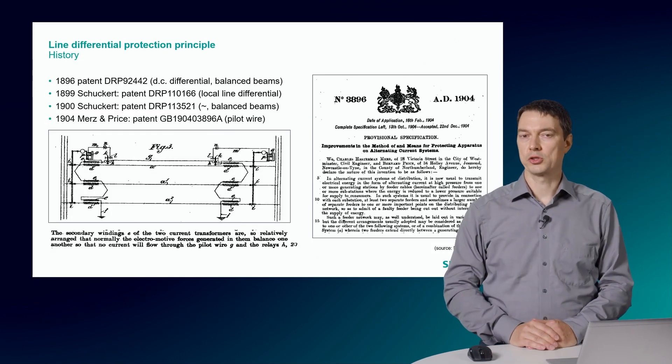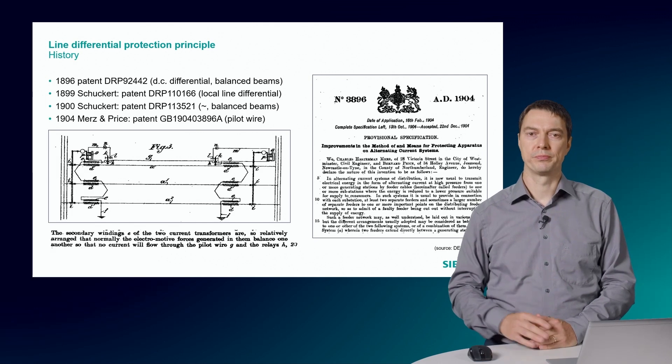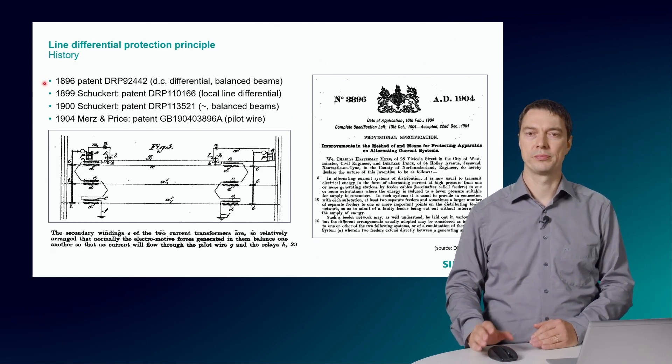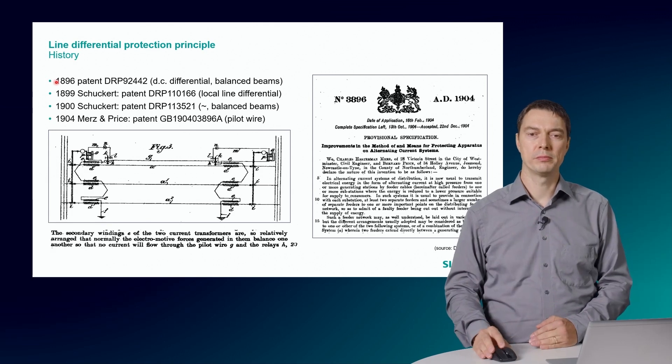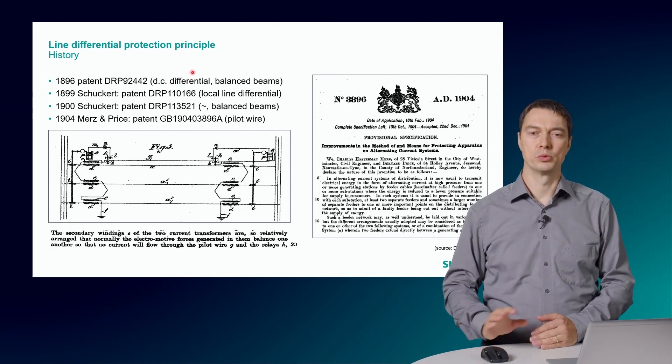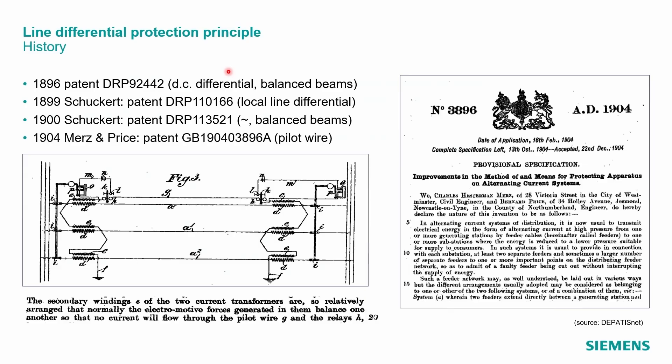The Line Differential Protection Principle is very old. It started around 1900 with patents by Schugert. A balanced beam was used for the DC differential protection. Later, around 1900, Schugert enhanced it further for the AC lines but still used the local measured currents for the differential protection. Merz and Price in 1904 marked with their patent the birth of the Line Differential Protection.